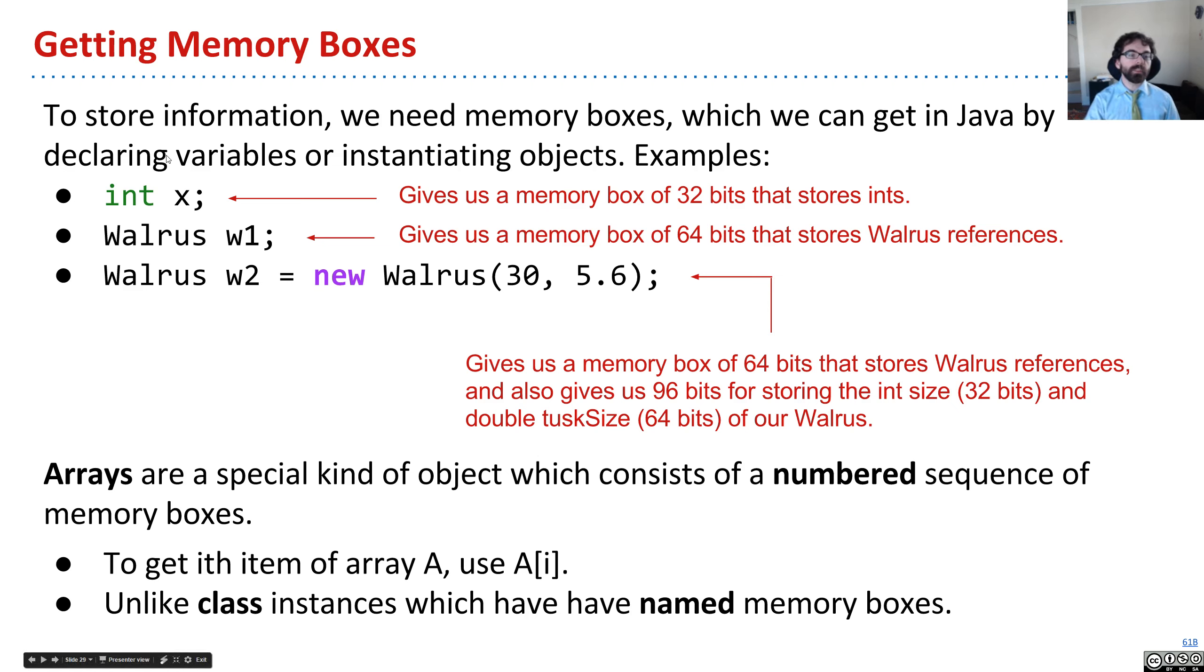One of them is to declare a variable. For example, if I say int x, Java gets me 32 bits of memory, sets them aside as a little box for us, and then we can store integers in that box.